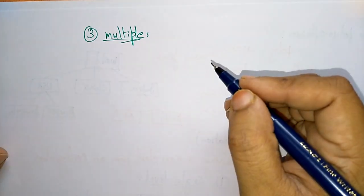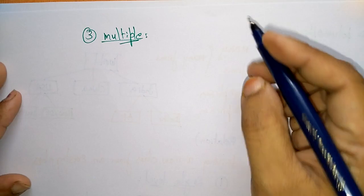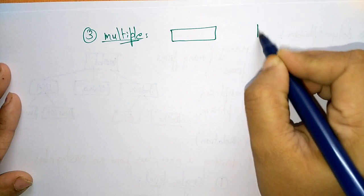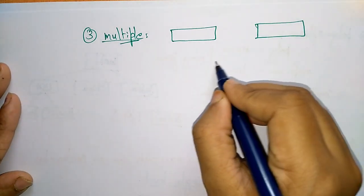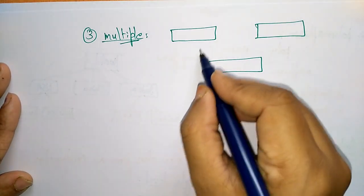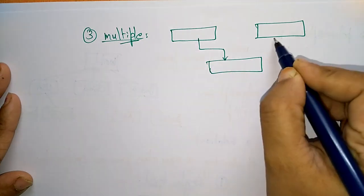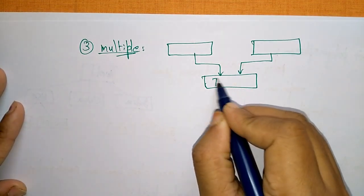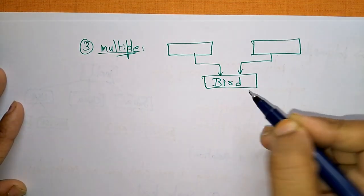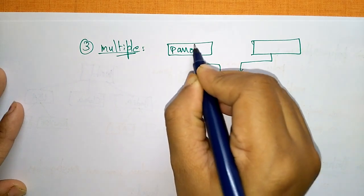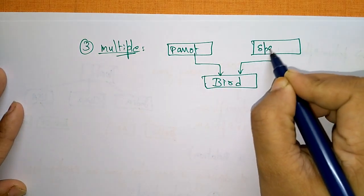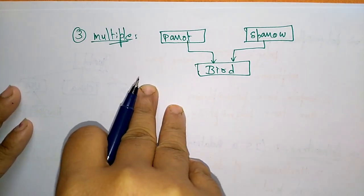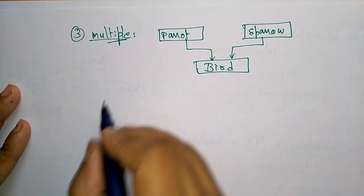The third type is multiple inheritance. In multiple inheritance, one base class is derived by two derived classes. For example, take bird — the bird may be a parrot or a sparrow. This is the way you express multiple inheritance.